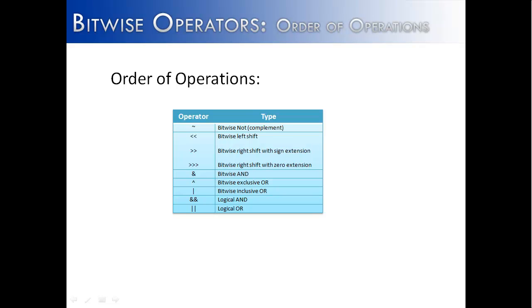So what I've done is I've created a table here. It's actually just a subset of a larger table. And what it shows is the different bitwise operators we've talked about and their order in which they are used by the compiler. So first we have the NOT, or the complement, left shift, right shift, and logical right shift.